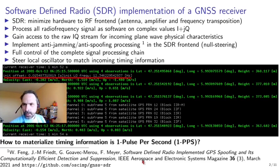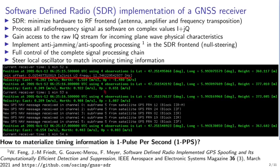Thanks to the software-defined radio processing, we have full control of the signal processing chain, and the objective will be to steer the local oscillator with the time information received from the GNSS receiver. Looking at the output of GNSS-SDR, we have added additional information: an initial offset representing the time offset between our local clock and the GNSS receiver clock, and the frequency offset between our software-defined radio RF front-end and the GNSS oscillator.